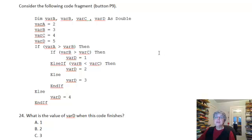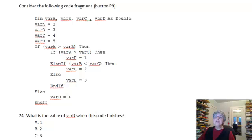Here's another code fragment with a more complicated setup. We have var A, var B, var C, and var D — they all have values — and we want to know the value of var D when this code finishes. Starting out, is var A bigger than var B? No. So we skip the if block and do the else: var D is 4. So we get answer D.